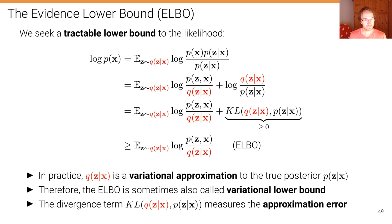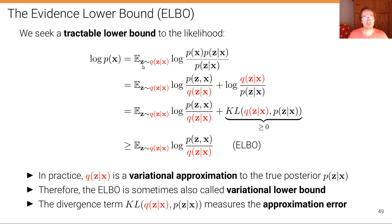Using this recognition model q — which I highlight in red — we seek a tractable lower bound to the likelihood called the ELBO, or Evidence Lower Bound, because it's a lower bound to the log likelihood, which is sometimes called the evidence. The log likelihood can be rewritten as an expectation over C; we add two terms that cancel, and this expectation doesn't change the equation — it's a trick where we add something that doesn't matter.